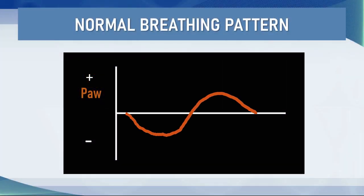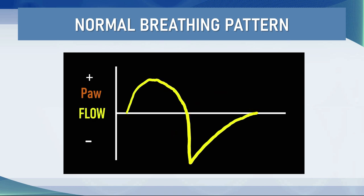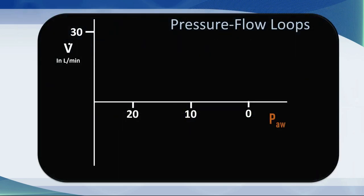Early on in this course I showed you the normal breathing pattern — a slight negative deflection of airway pressure on inspiration and a slight positive deflection on exhalation. When you look at the flow curve of gas going in and out of the lungs there is positive flow on inspiration and negative flow on expiration — the sinusoidal wave pattern we typically see in patients breathing without assistance. You can superimpose one on top of the other and come up with a pressure-flow loop. On the y-axis we have flow in liters per minute and on the x-axis we have airway pressure.